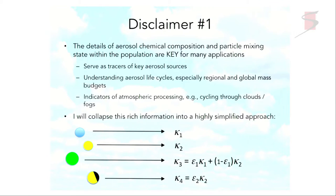So I begin with a disclaimer. The details of the aerosol chemical composition, particle mixing state within the population — things that atmospheric chemistry persons like myself really enjoy digging into — are very key for many applications. These are important tracers of understanding aerosol sources, life cycles, how mass is added and removed from the aerosol size distribution, especially on regional and global mass budgets. They're also indicators of atmospheric processing; as we look at the details of the chemistry size distribution, we can detect processes like cycling through clouds and fogs.